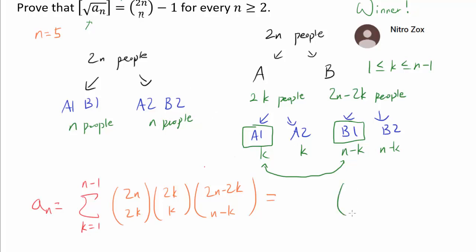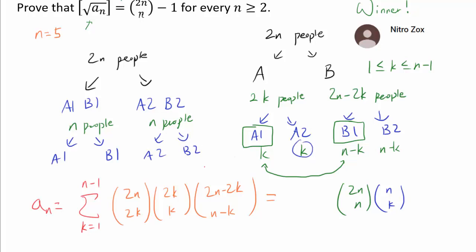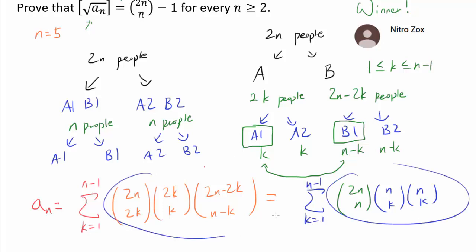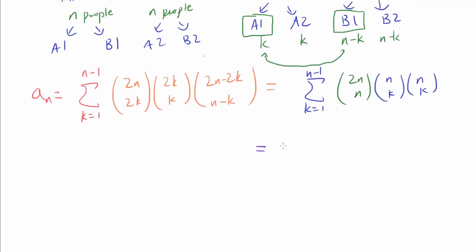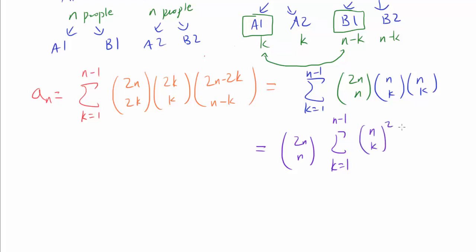Reasoning this way, we start with C(2n, n) ways to choose the n people in A1∪B1. Then from that group of n people, we split into A1 and B1: A1 has k people, so we multiply by C(n, k). Similarly, the other n people split into A2 and B2, with A2 having k people, so we multiply by another C(n, k). We still have the summation, but this expression is much more simplified. We can factor C(2n, n) outside the summation since it is independent of k, giving a_n equals C(2n, n) times the sum from k=1 to n-1 of C(n, k) squared.